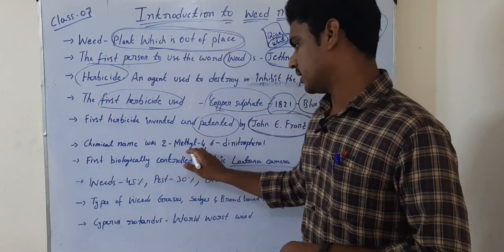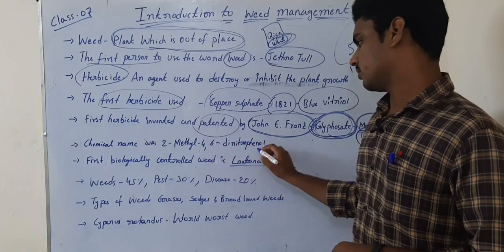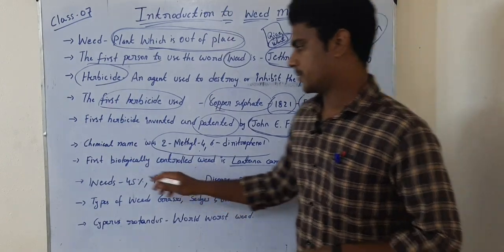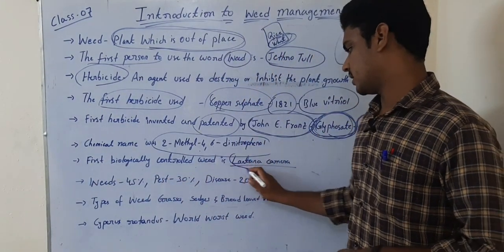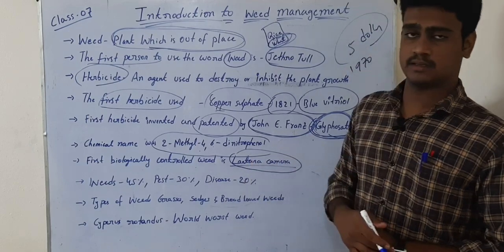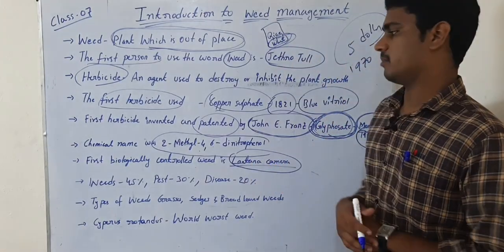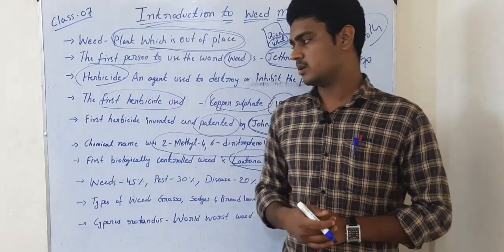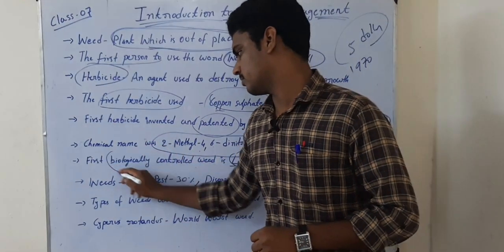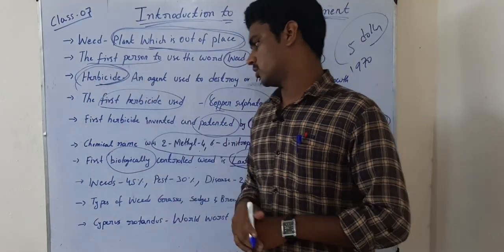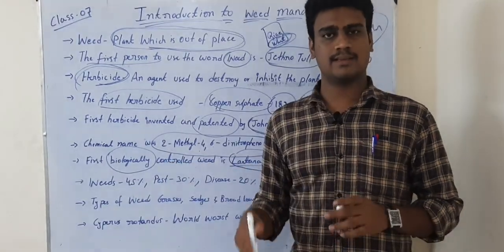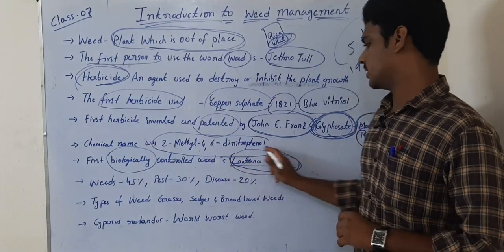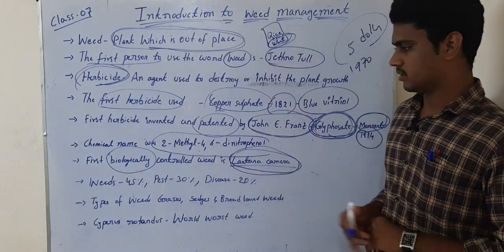The chemical name of glyphosate is 2-methyl-4-6-dinitrophenol. The next important point: the first biologically controlled weed is Lantana camara. Among the four types of weed control methods, biological control uses insects or parasites to control weeds, and the first weed controlled this way is Lantana camara.